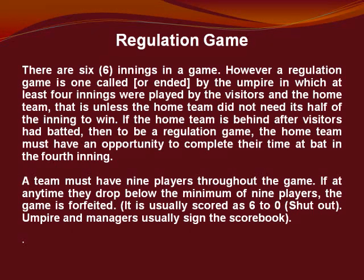A team must have nine players throughout the game. If at any time they drop below the minimum of nine players, the game is forfeited, and is usually scored as 6-0 — a shutout. The umpire and managers usually sign the scorebook.